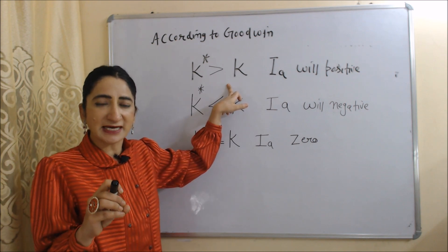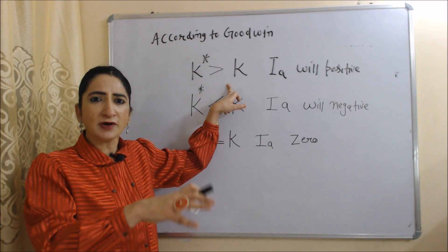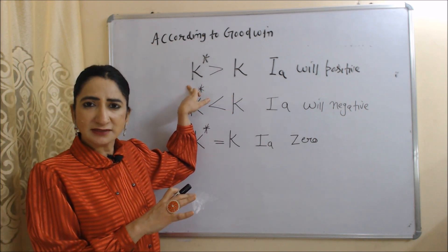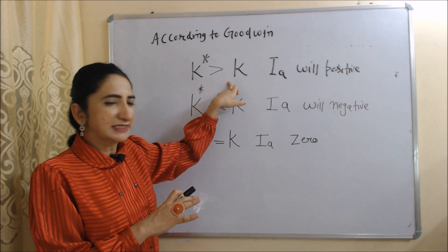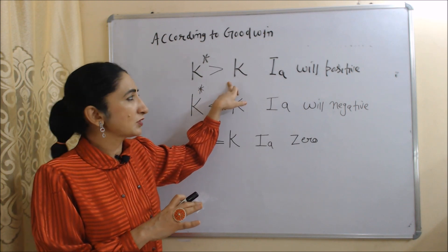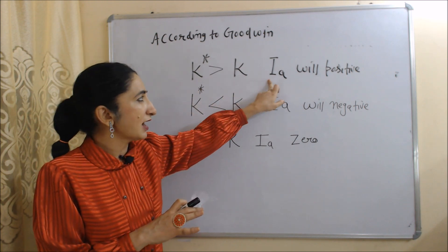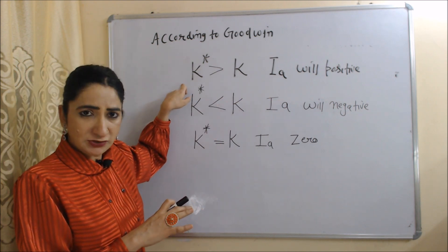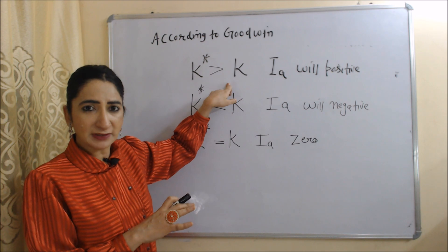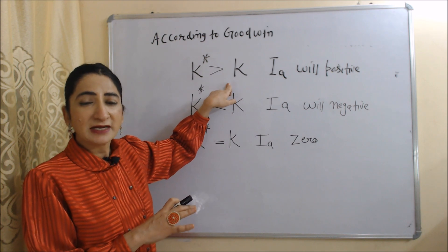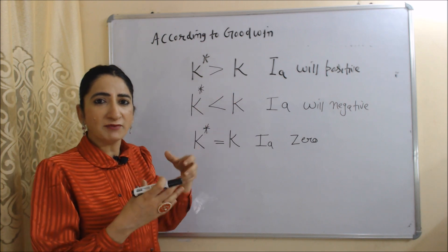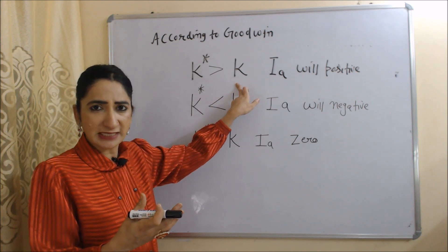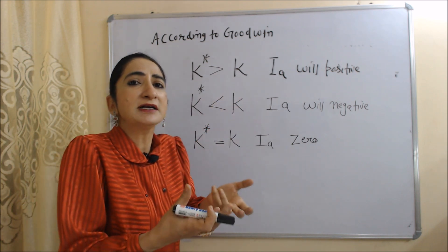According to Goodwin, the gap between K* and K can create fluctuation in economic activity — meaning the gap between K* and K can cause ups and downs in the economy. K* means desired capital stock, K is actual capital stock, and I_n is net investment. If desired capital stock is more than actual capital stock, that means we have more desire for capital but actual capital stock is less.